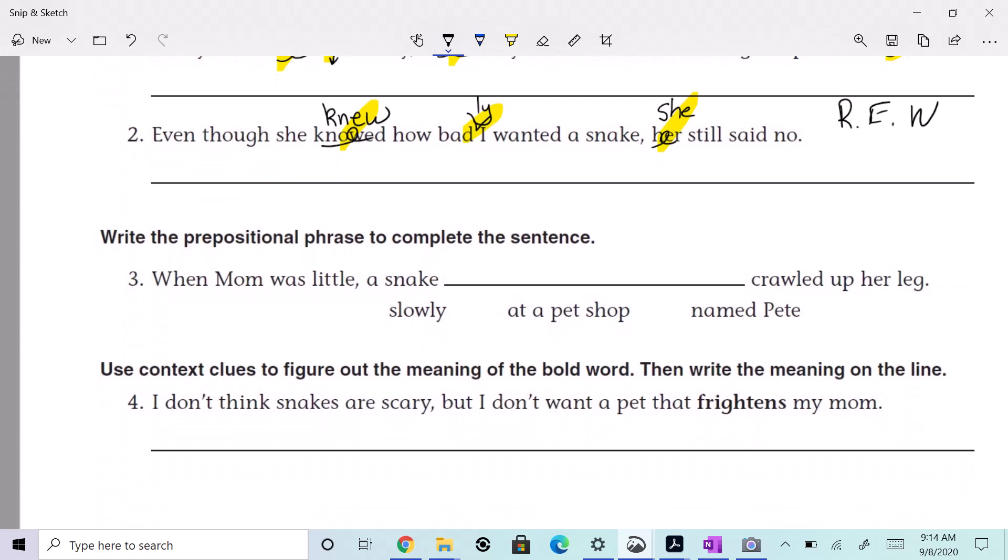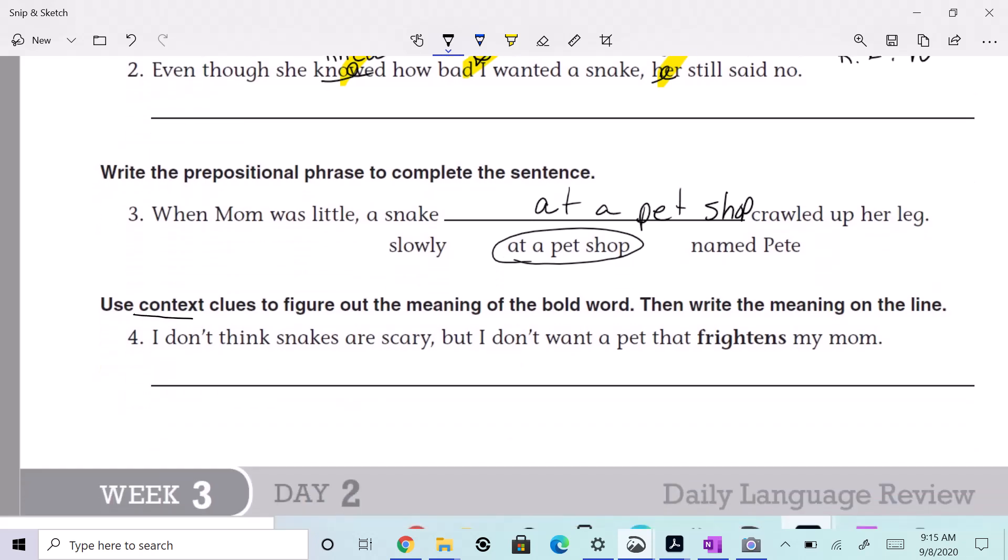When Mom was little, a snake slowly crawled up her leg. A snake at the pet shop crawled up her leg, or a snake named Pete crawled up her leg. What is the phrase? What's the phrase that we're looking for? Prepositional phrase. It's going to be 'at a pet shop.' I'm not going to hold you guys too accountable on that one because we have to go over those. At a pet shop is the prepositional phrase. All right. It says for this next one, use context